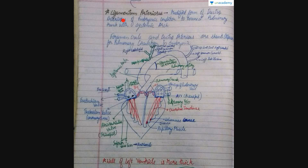Revising the structure of the heart from the diagram: the right atrium has three openings — superior vena cava, inferior vena cava, and coronary sinus. Chordae tendineae can be seen within the ventricles, attached to the papillary muscles. When the ventricle contracts, the papillary muscles also contract, preventing eversion of the valves into the atria and hence preventing backflow of blood.